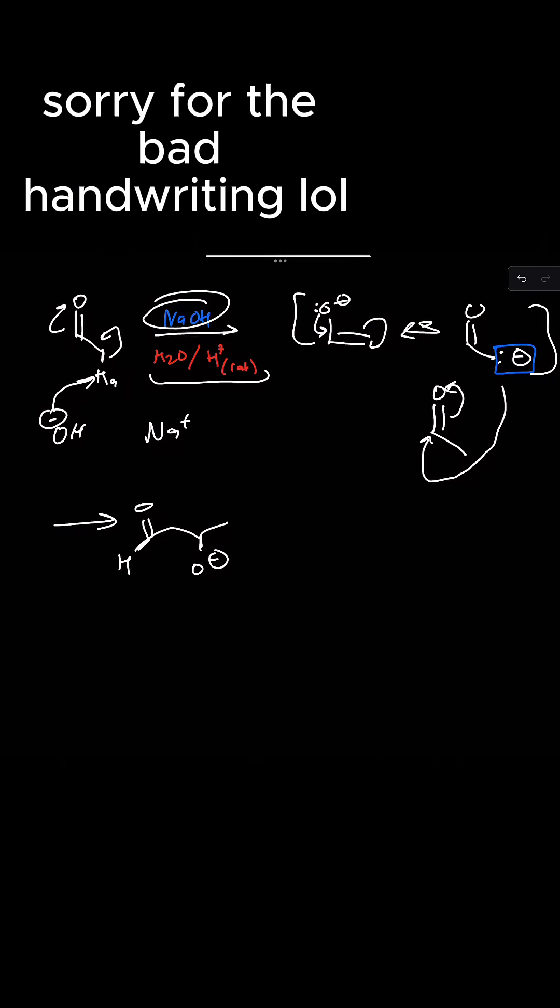Here's the hydrogen that I did not draw in for simplicity. You can see we have one, two, three, four—two from each. Now through our catalyst up here, H2O and H+, they will combine to form H3O+.